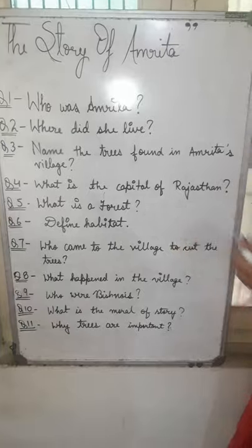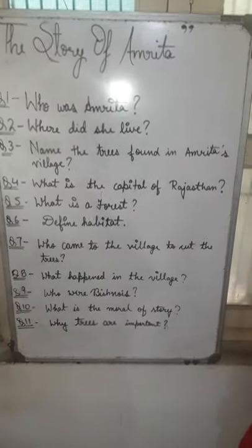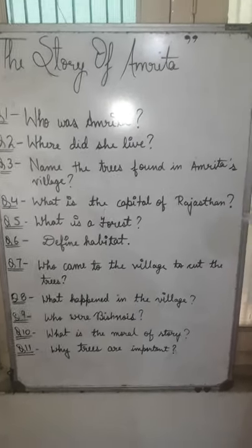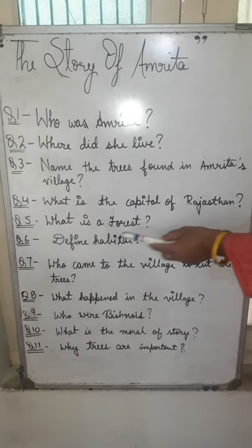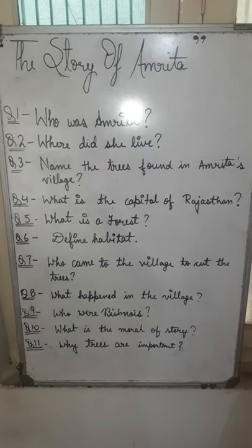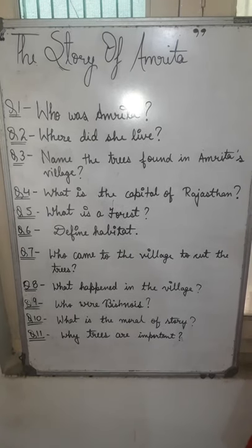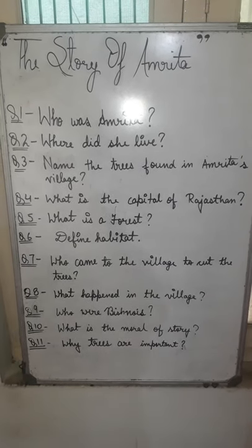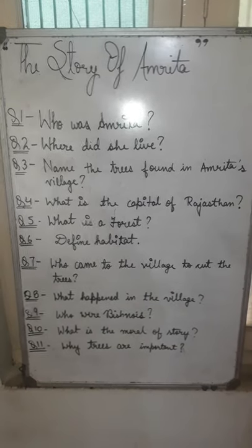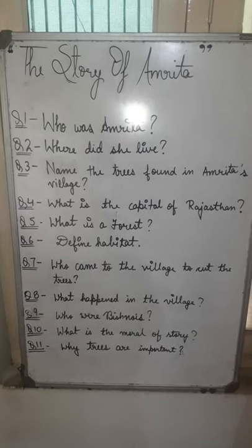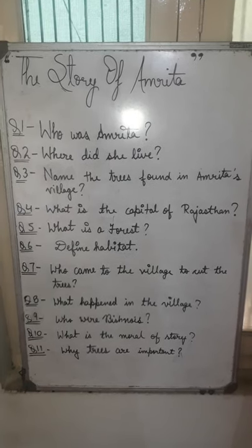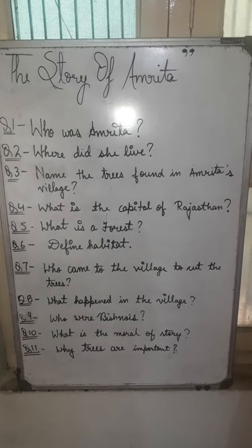Now define habitat. Habitat is a place where an organism lives. For example, elephants live in forests. Fish live in water bodies — that is known as aquatic habitat. Cactus plants are found in deserts — that is known as desert habitat.